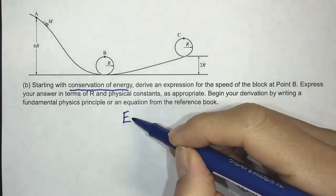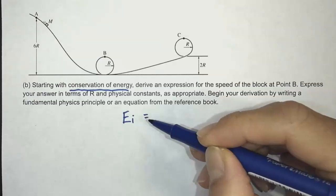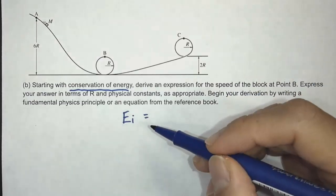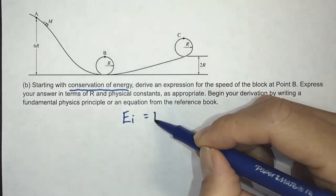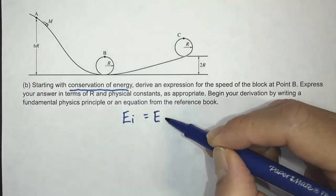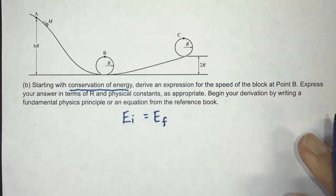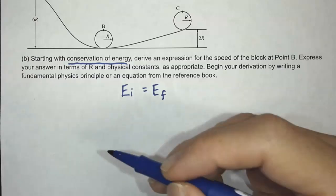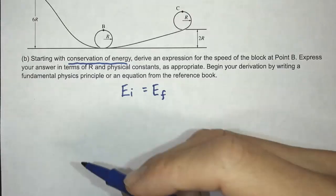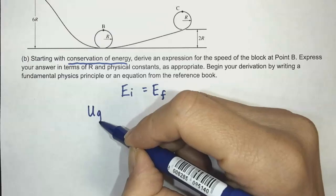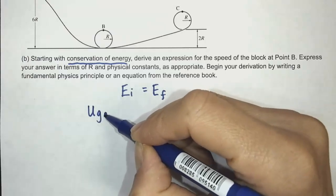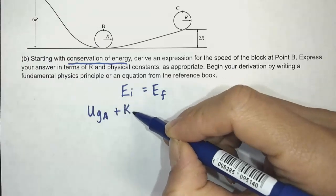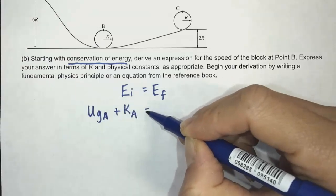So conservation of energy is saying that if there's no energy entering or leaving your system, there's no friction that's doing work on your system, then the initial energy is equal to the final. The initial total energy equals the final total energy. So here we're dealing with mechanical energy, which is kinetic and potential energy.